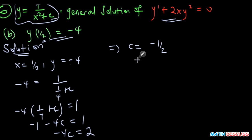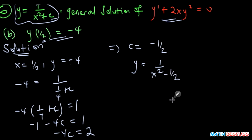Substituting c equals negative one half, the particular solution is y equals 1 over x squared minus one half.